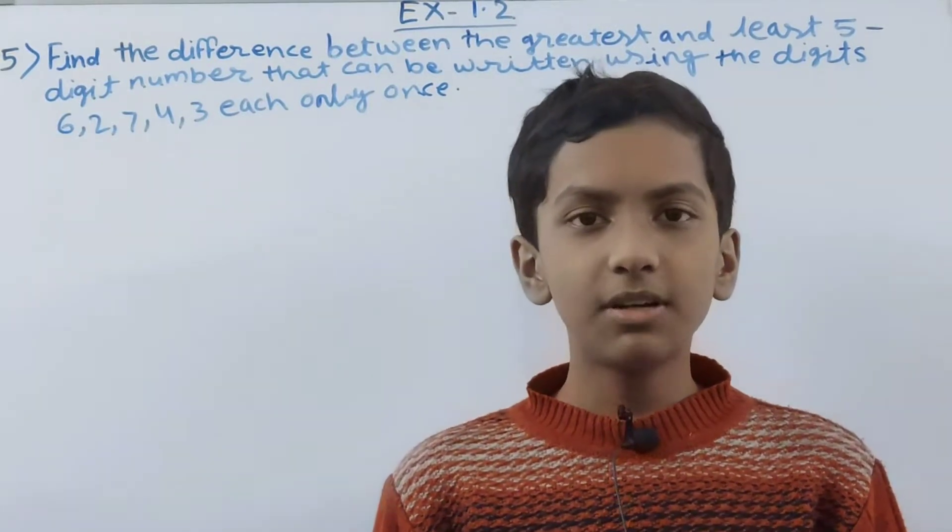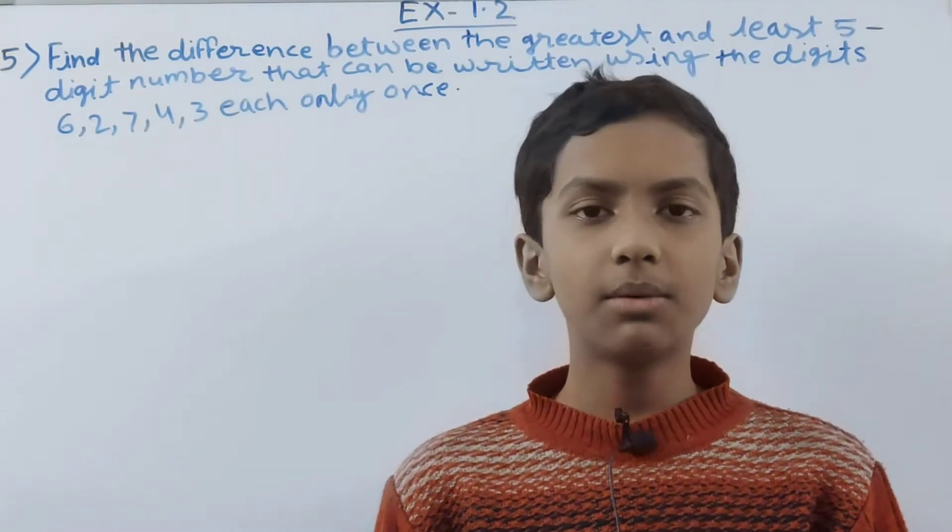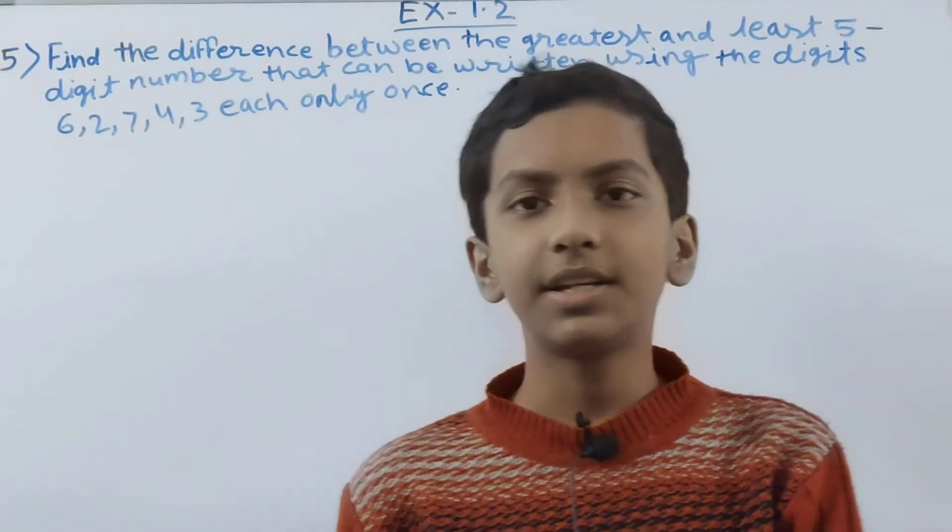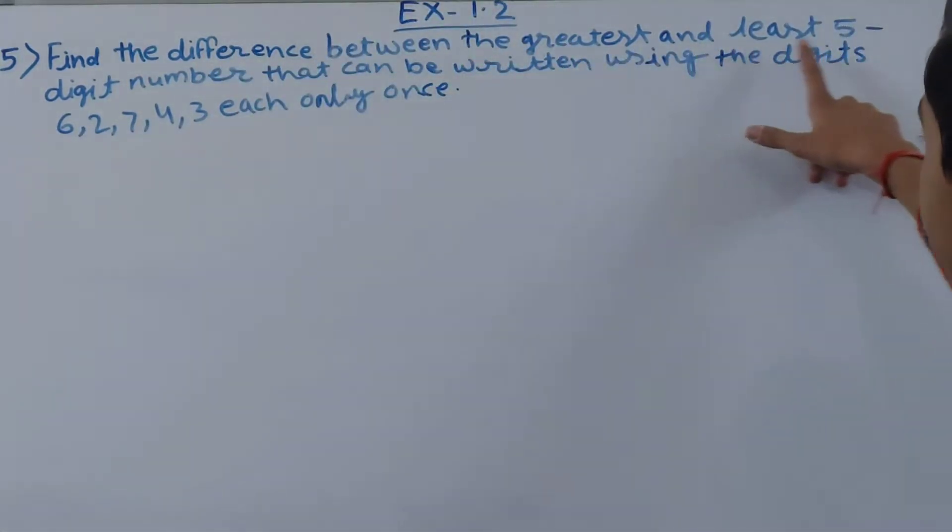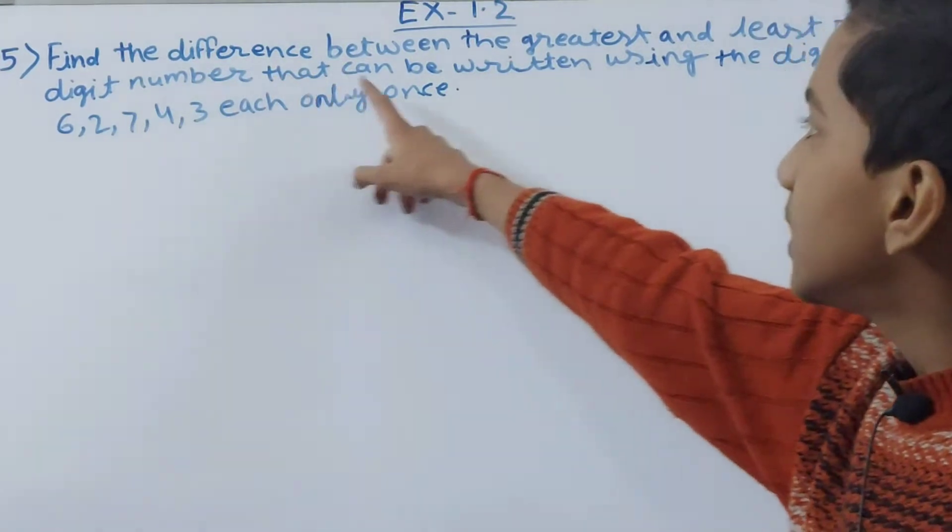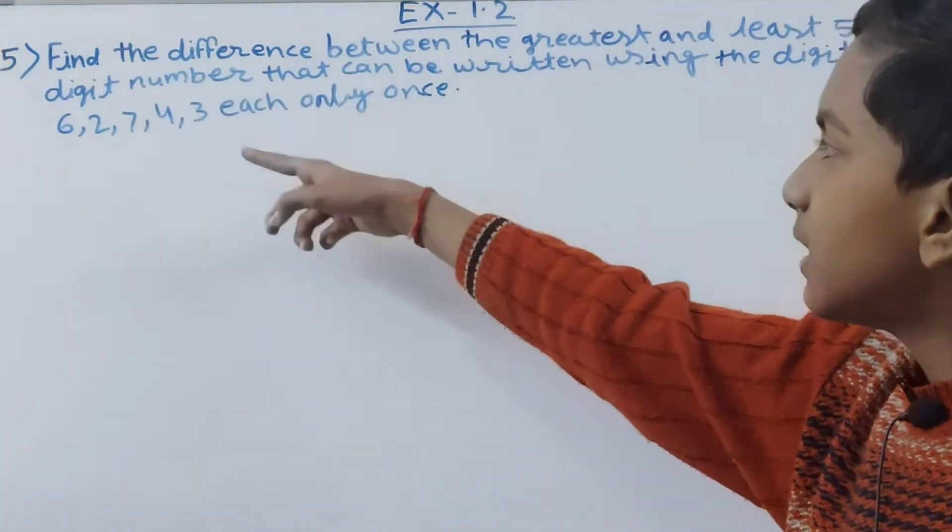Question number 5. So let's get started. Question 5 says find the difference between the greatest and least 5 digit number that can be written using the digits 6, 2, 7, 4, 3 each only once.